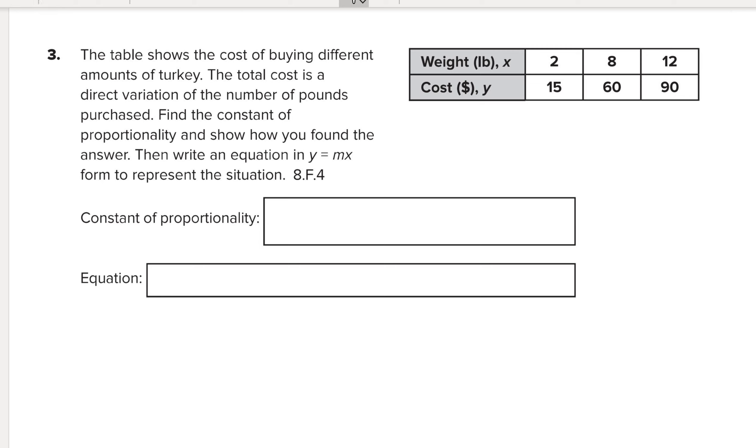So this question is talking about, there's a table over here on the right that shows the cost of buying different amounts of turkey. Turkey is usually bought by the weight. The total cost is a direct variation of the number of pounds purchased. Find the constant of proportionality and show how you found the answer. So then write the equation in y equals mx form to represent the situation.